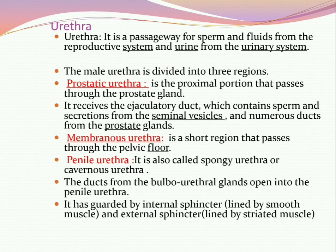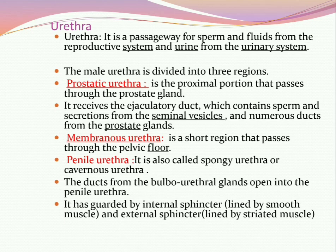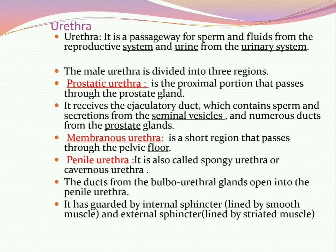The urethra is a common passage for sperm and fluid from the reproductive system, and urine from the urinary system. The male urethra is divided into three parts: the prostatic urethra, present near the prostate gland where numerous prostatic ducts open and which receives the ejaculatory duct containing sperm and seminal vesicle secretions; the membranous urethra, a short region passing through the pelvic floor; and the penile urethra, also called the spongy or cavernous urethra, where the bulbourethral (Cowper's) glands open.